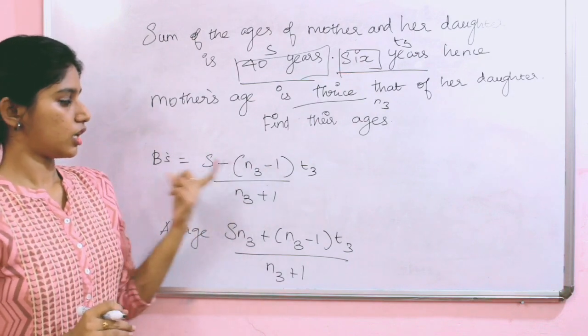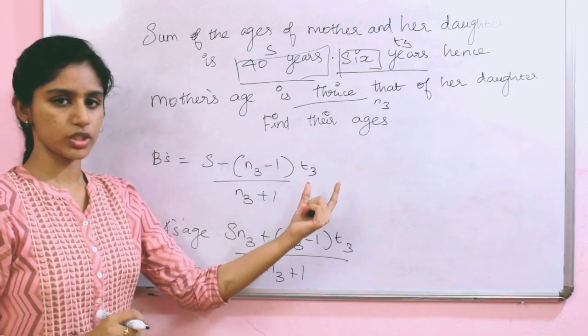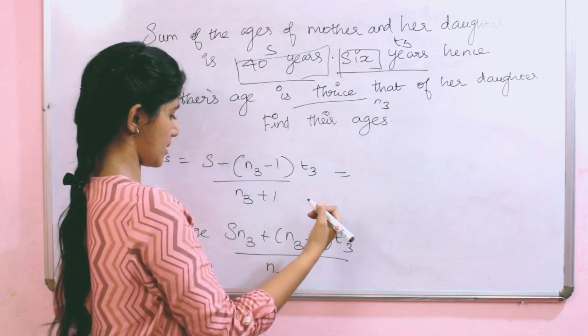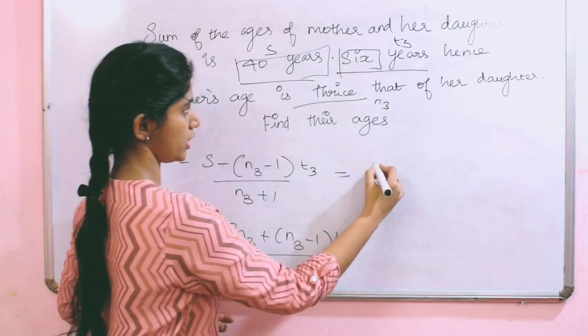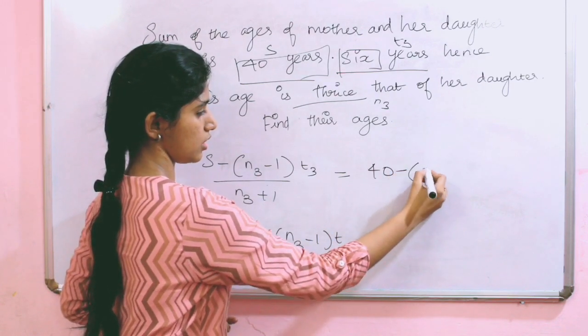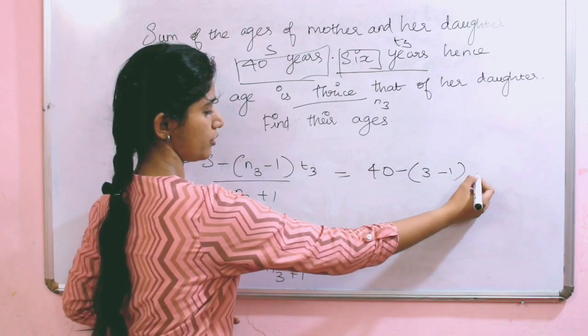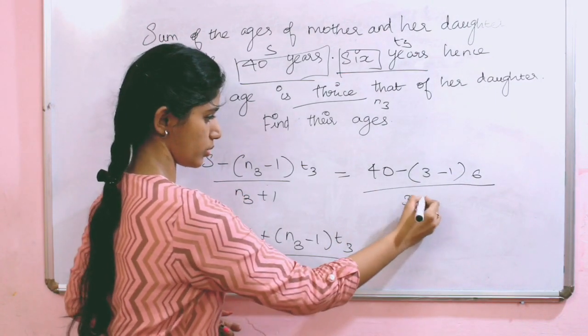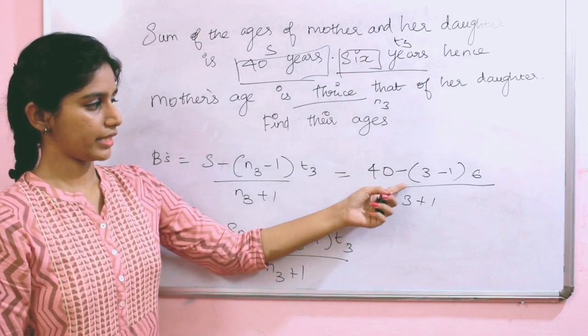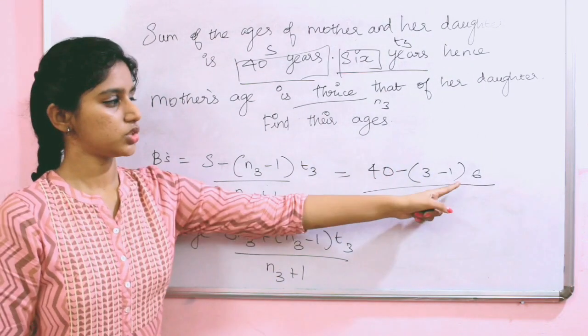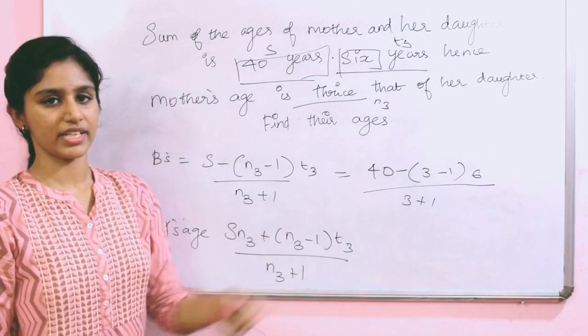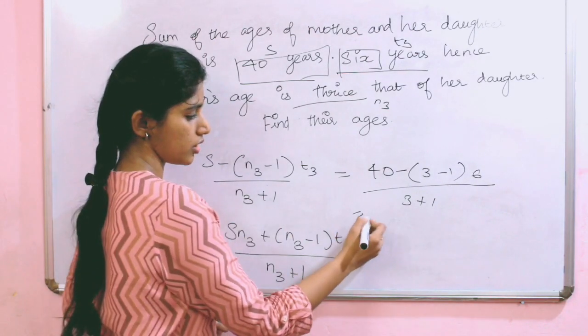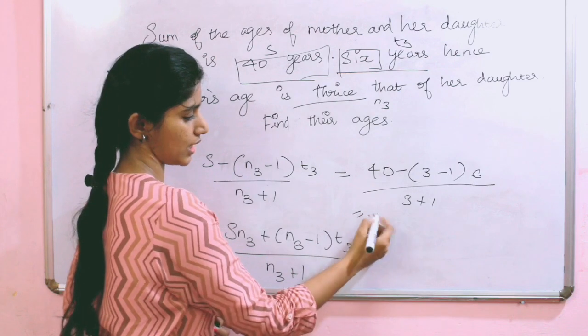B's age: S is 40 minus (3 minus 1) times 6, divided by N3, 3 plus 1. 40 minus 3 minus 1 is 2. 6 twos are 12. 40 minus 12 is 28. 28 by 4 is 7 years. The daughter's age is 7 years.